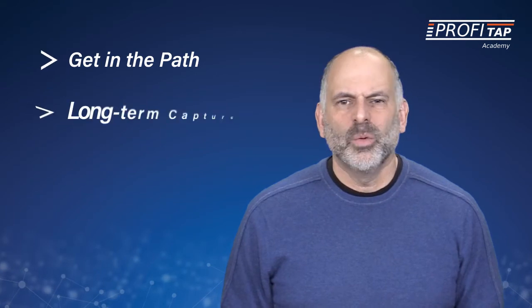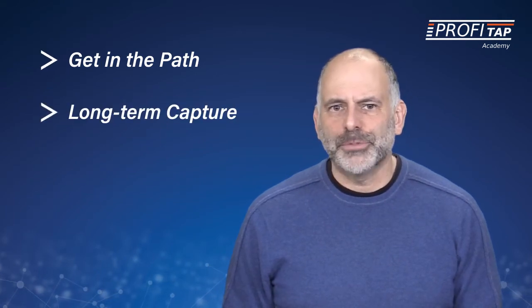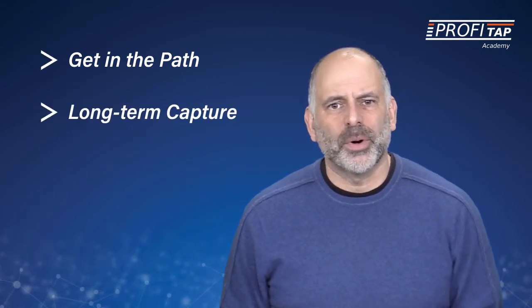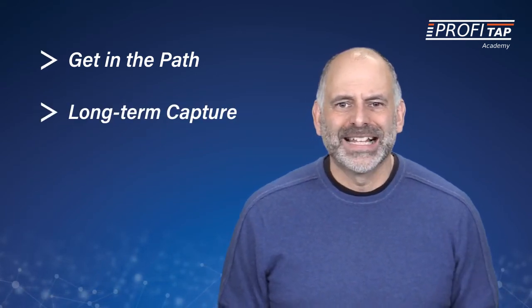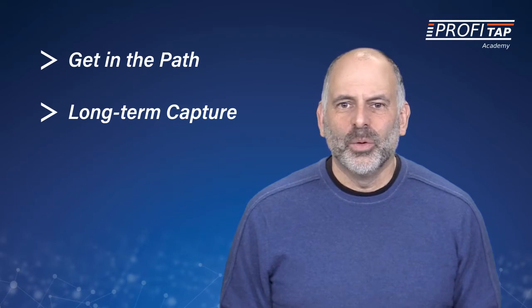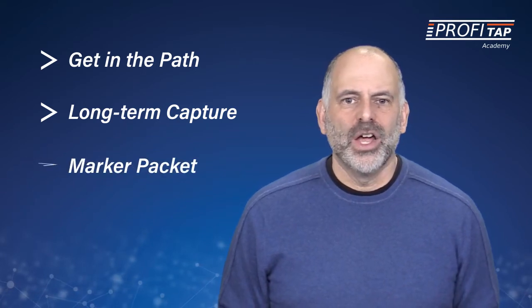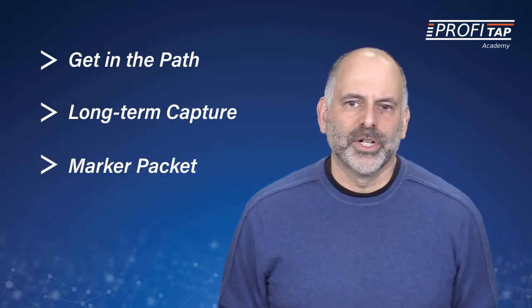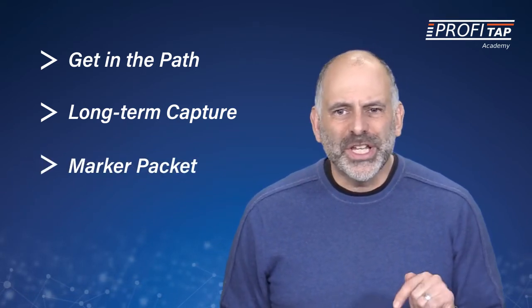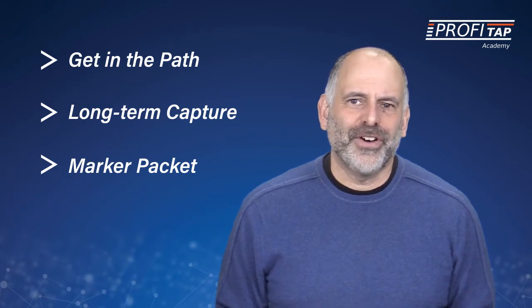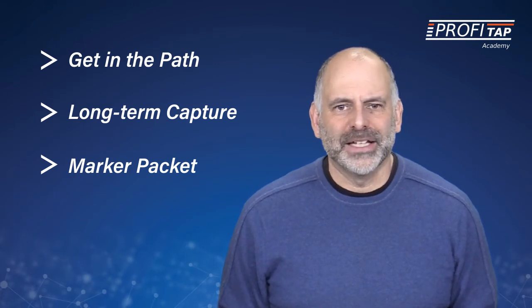There are three key steps to resolving intermittent problems. First, we must get in the path of the packets. Second, we need to be able to capture for a long time so we don't miss the problem. Lastly, we need a way to identify when the problem occurs so we can drill down into the trace and find the problem packets.